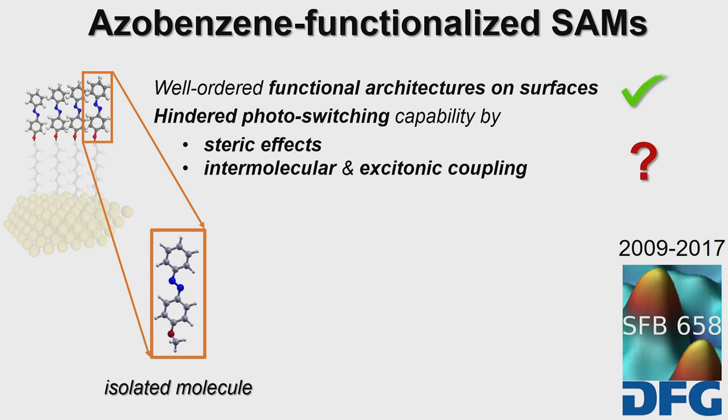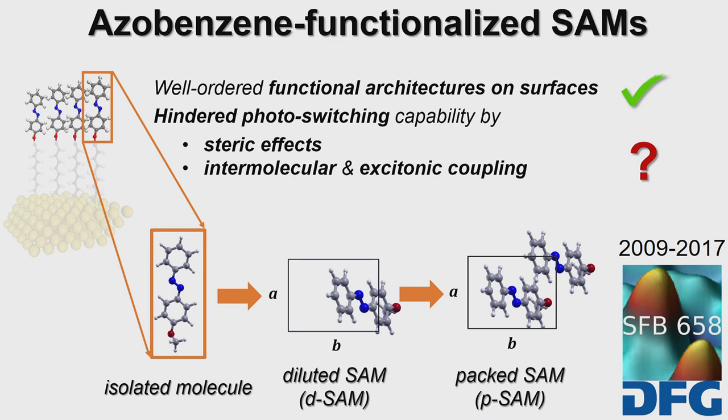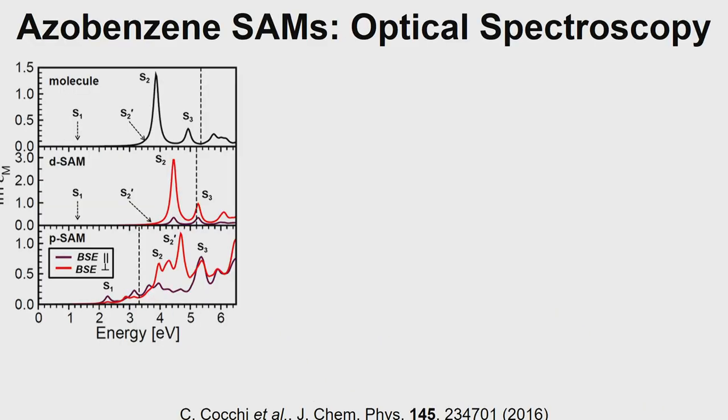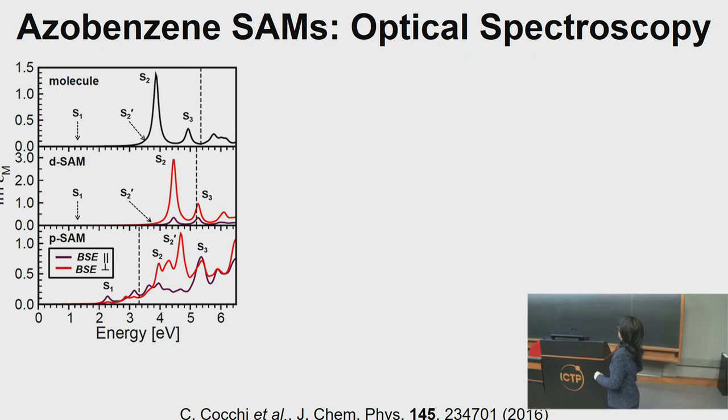The way we tackled the problem was the following. We forgot about the substrate and just considered the azobenzene molecule. We started from the isolated azobenzene with this oxygen bridge and methyl functional group to reproduce the coordination with the alkyl chain. Then we considered two more model systems: a diluted SAM, with one molecule in the unit cell viewed from the top, and the packed SAM with two molecules in the same unit cell. From now on, I will refer to these as the D-SAM and the P-SAM.